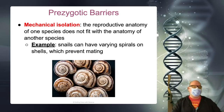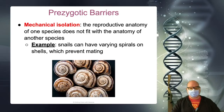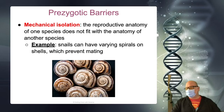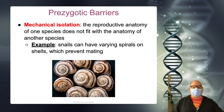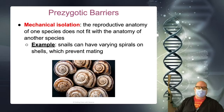This one is called mechanical isolation — when things just don't fit together. We picked something pretty tame for the example. There are snails that have shell shapes that prevent mating. It doesn't always have to be genital-based.